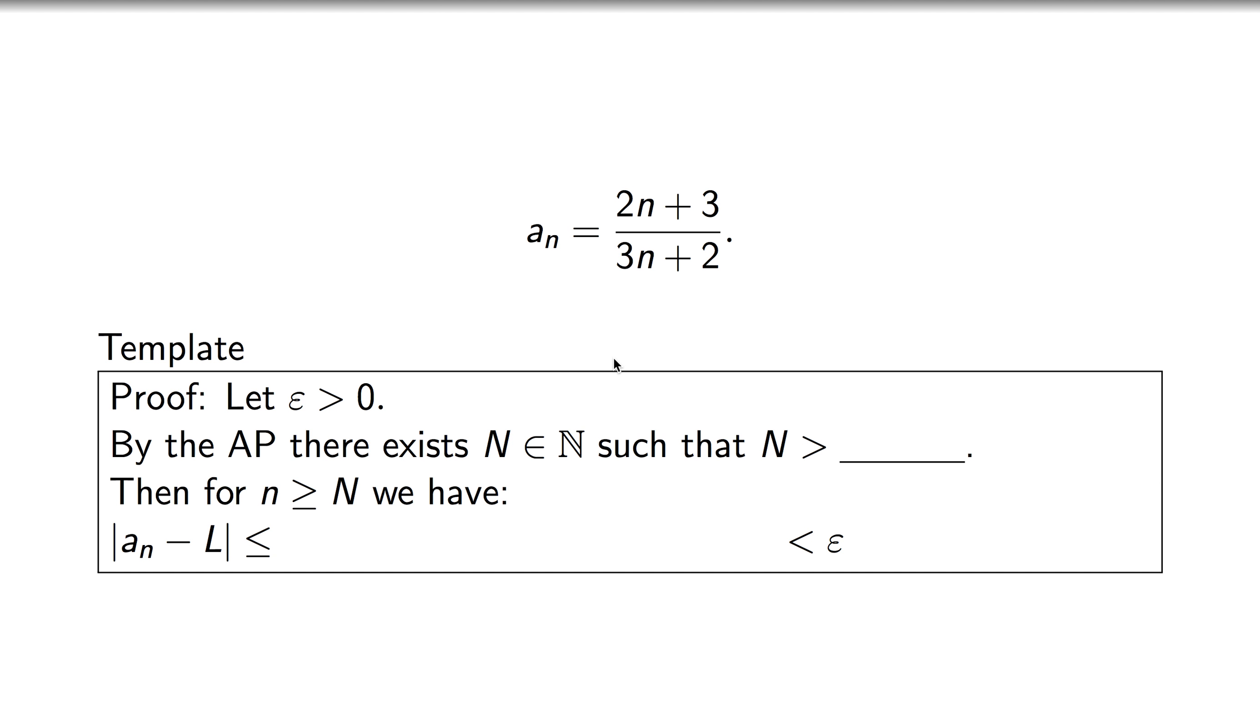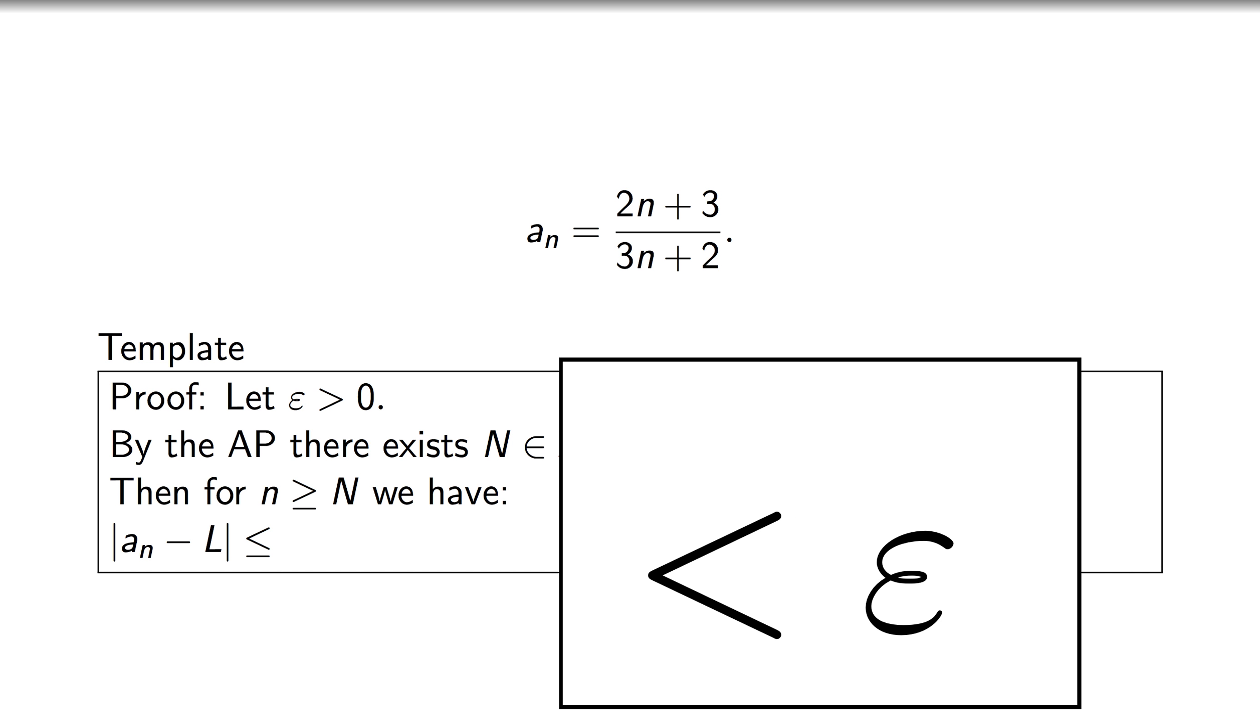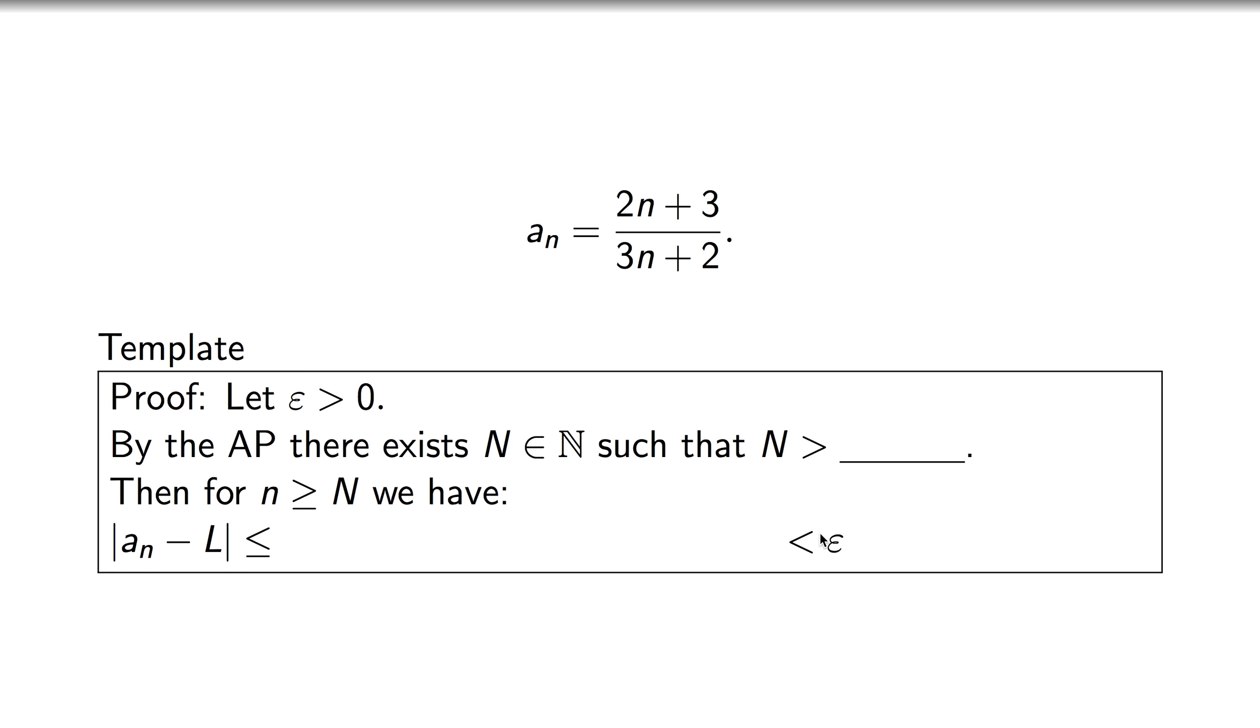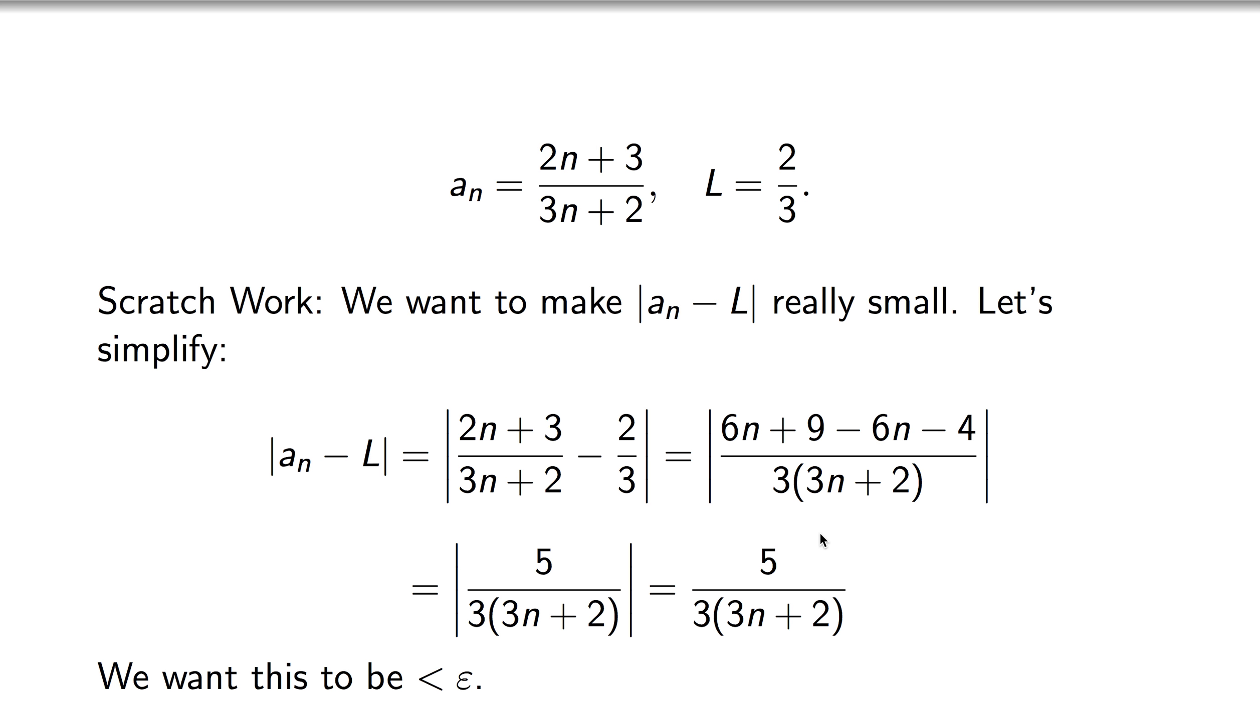We know by the Archimedean property there will be a natural number N, and we're going to determine what that is later. When little n is greater than capital N, the distance between our point in the sequence and the limit is going to be smaller than epsilon.